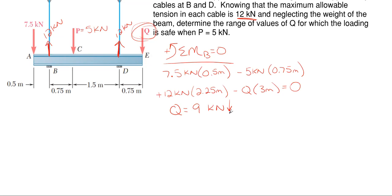So we're going to repeat the process, but summing moments at point D, and that will give us Q that will create the 12 kilonewtons at point B. All righty, so let's just change colors here.